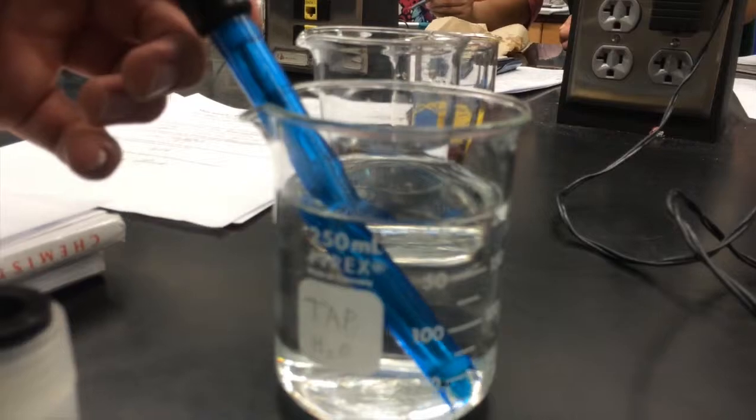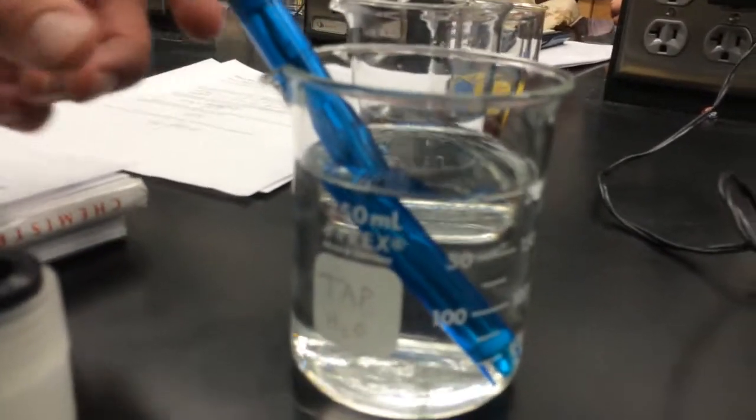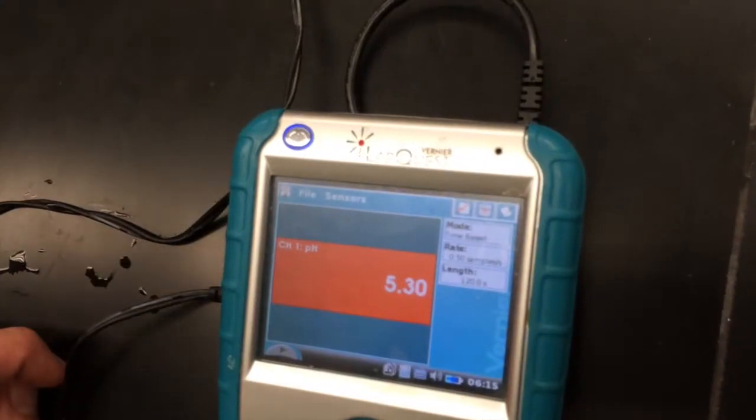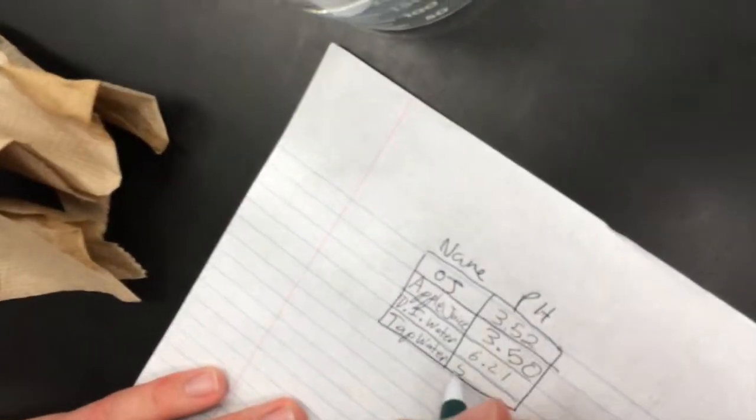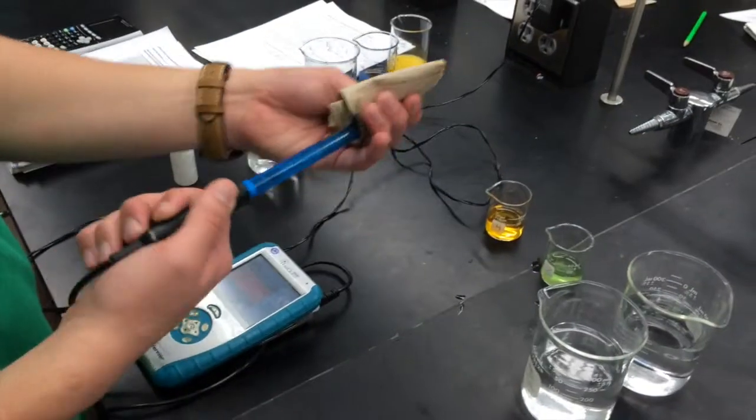Ben tests the pH of tap water, which comes out to be 5.30. Ben is now finished with the pH meter, so he begins to clean it for storage.